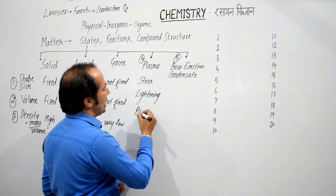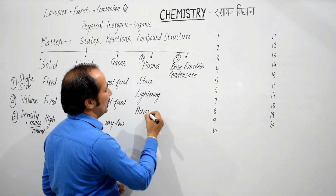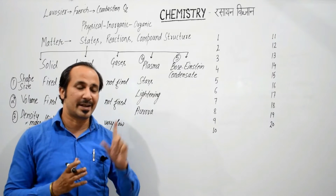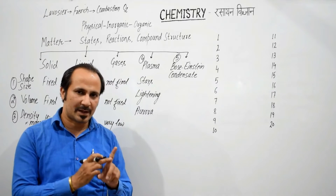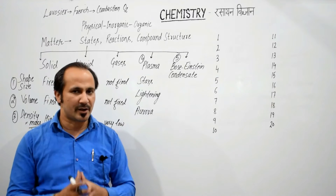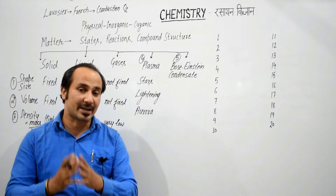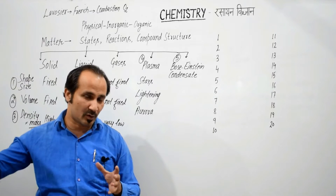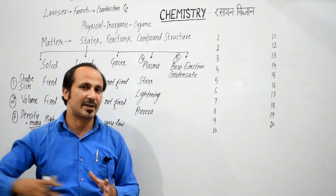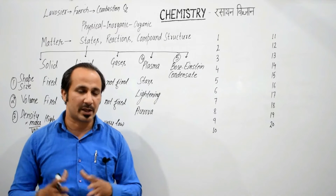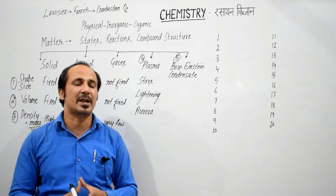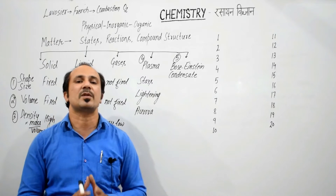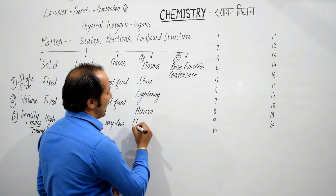...या जब बिजली चमकती है, lightning strike करती है, या aurora — Earth have five atmospheric layers naming troposphere, stratosphere, mesosphere, ionosphere, and magnetosphere, and the last one is exosphere. Magnetosphere में जब solar winds आती हैं, सूरज से हवाएं जो होती हैं, temperature high होता है, और जब magnetosphere में entry करती हैं तो एक shine यानि एक चमक पैदा करती हैं — और उस चमक को कहा जाता है northern light.